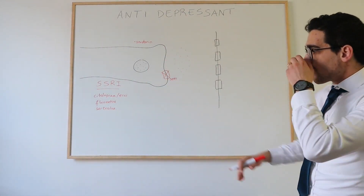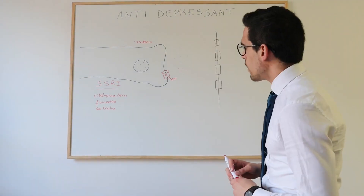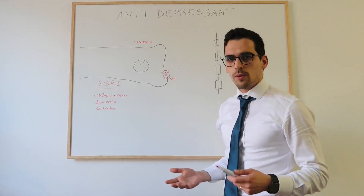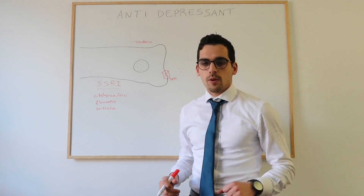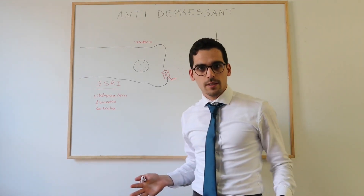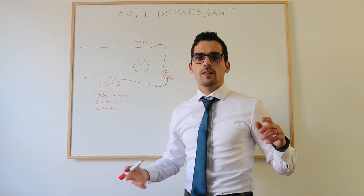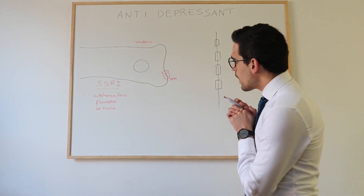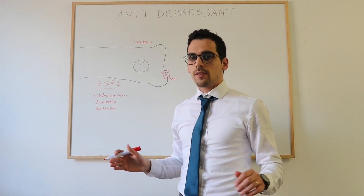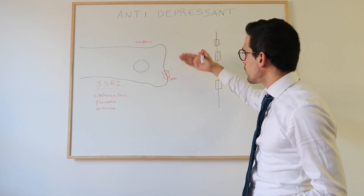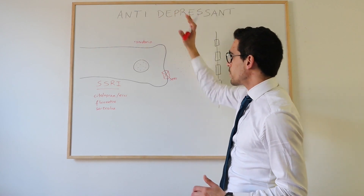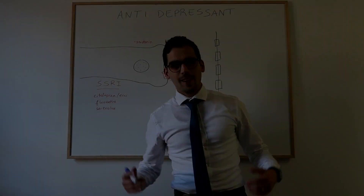SSRIs are the first-line treatment for depression but have side effects. Too much serotonin in the synapse can make patients feel agitated or irritated. Serotonin also speeds up the gastrointestinal system, which can cause diarrhea and vomiting. If SSRIs are discontinued very rapidly, patients may suddenly have no serotonin available, which can cause sleep disturbances since serotonin is very important for sleep.